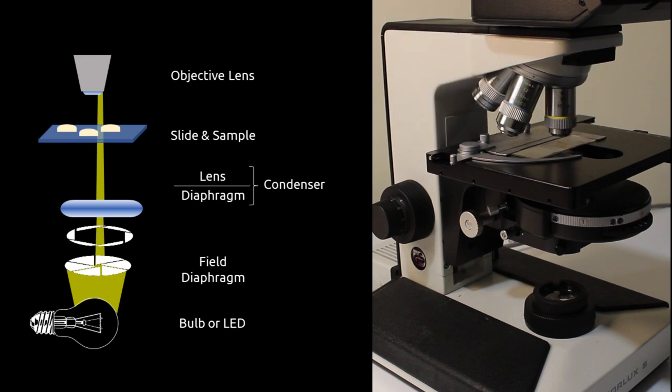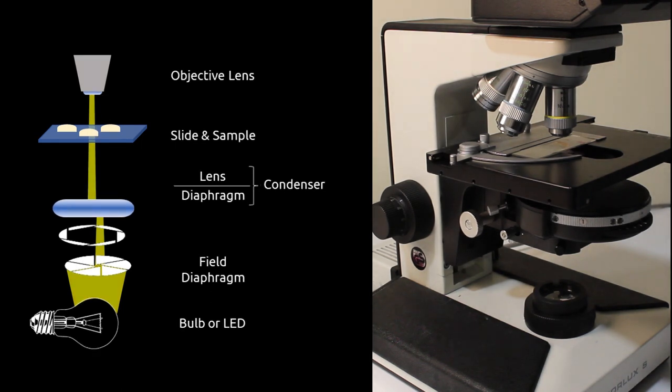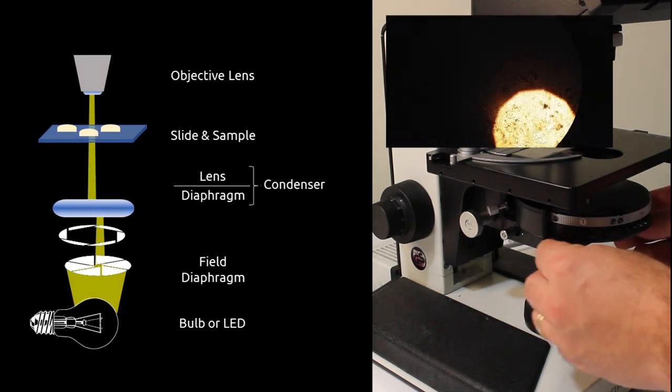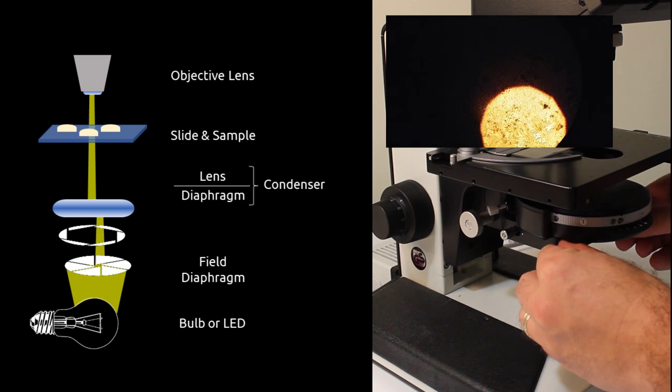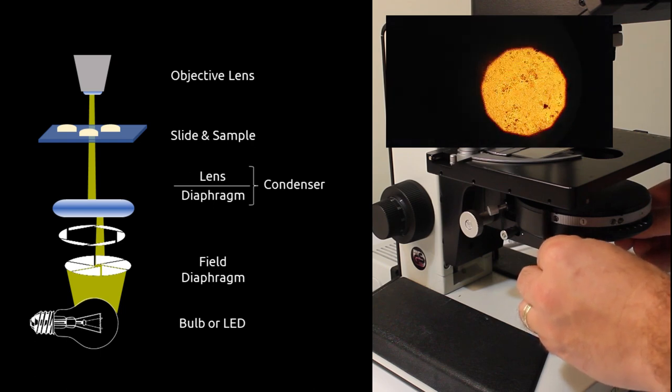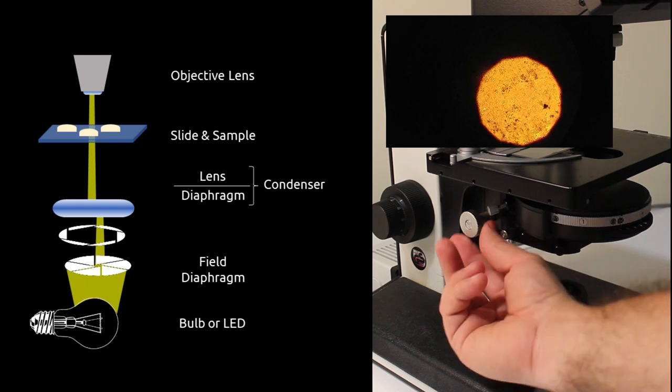We then want to center the illumination into the center of the objective lens. To do this, turn the adjustment screws located on either side of the condenser to move the hexagon to the center of your field of view. This now means that we are focused on the field diaphragm and we have centered our light source in the middle of the objective lens.